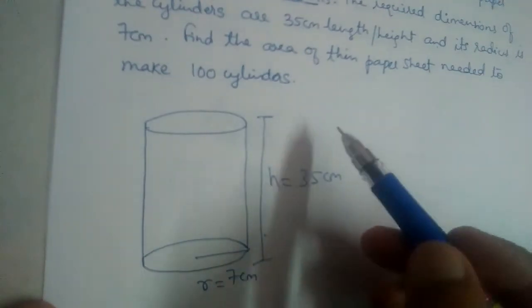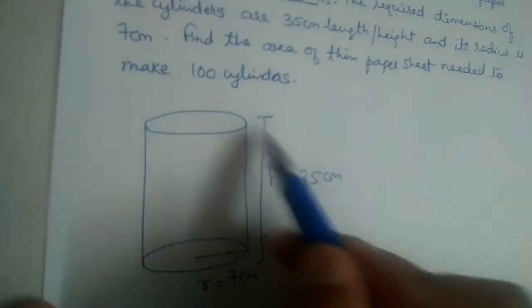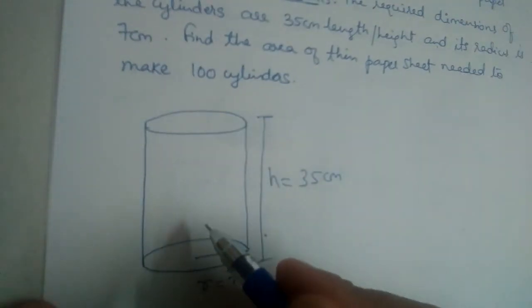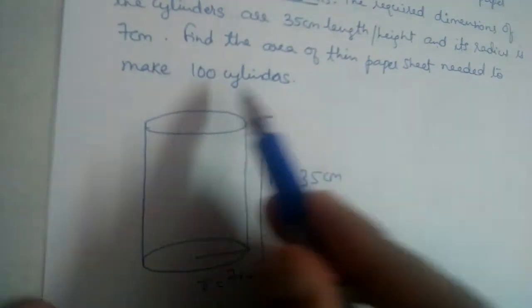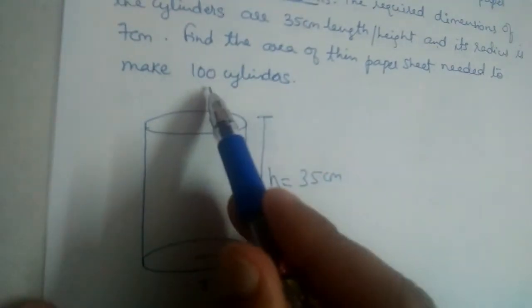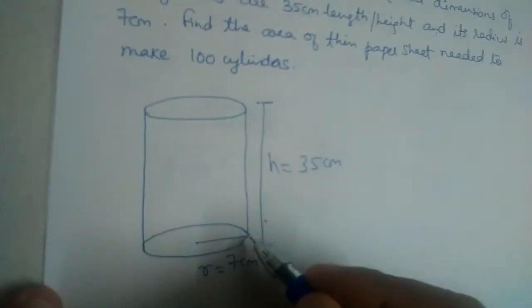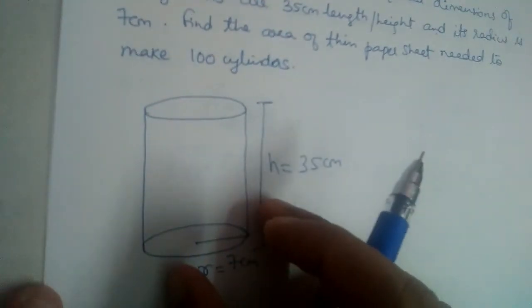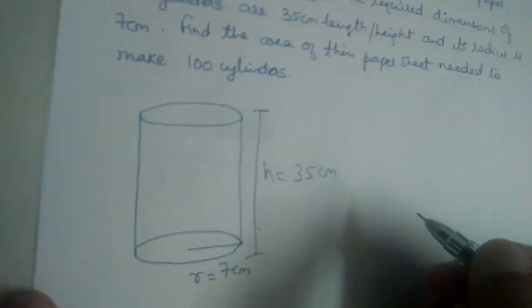First we will find how much paper is needed to make 1 cylinder and then we will multiply that answer with 100. It is always a good practice to draw diagrams in mensuration, in this chapter.